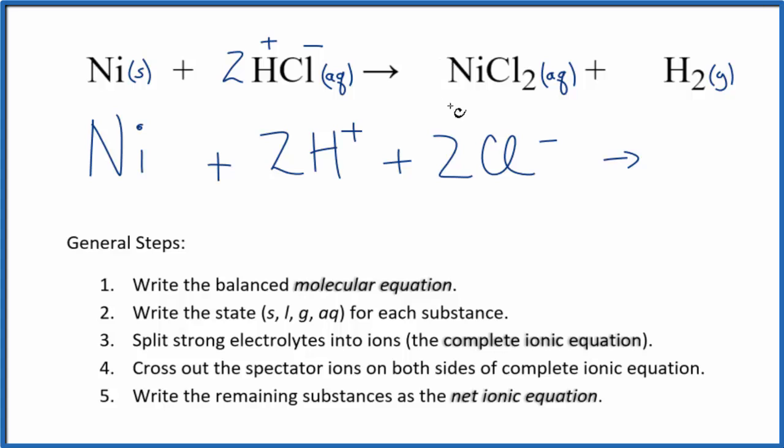In the products, nickel is a transition metal so we don't know its charge. We do know the chloride ion is one minus. Since we have two of them, it has to be two plus. So we have the nickel two ion, Ni2 plus. Then we have two of these chloride ions. Then we don't split gases apart in net ionic equations so we have H2.